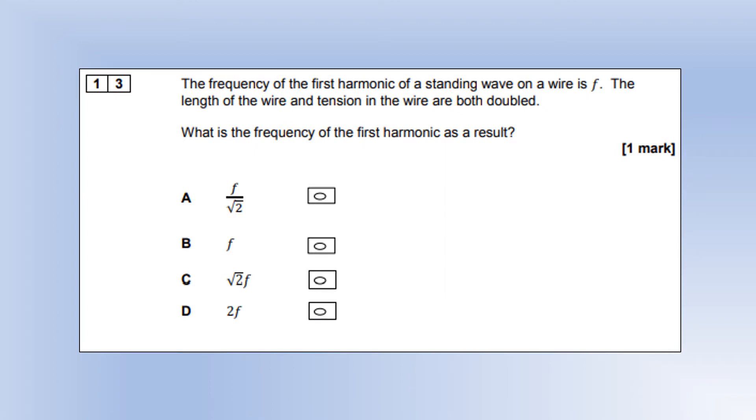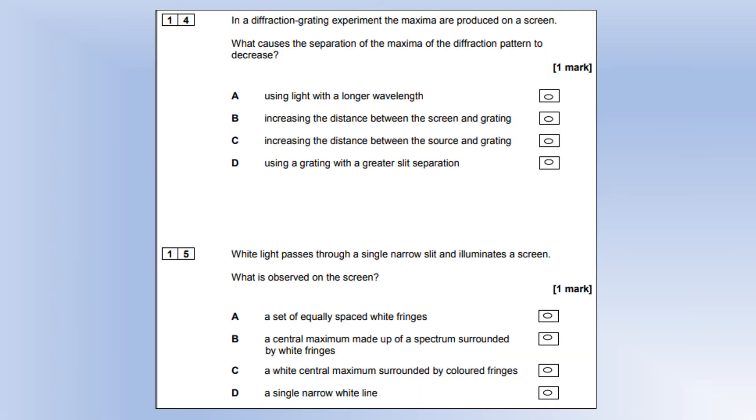The frequency of the first harmonic of a standing wave is F. The length of wire and tension are both doubled. What is the frequency of the first harmonic as a result? I'm going to express the new frequency divided by the old frequency. So we've doubled the length and we've doubled the tension. Lots of this stuff cancels out and you get left with root 2 over 2. So the new frequency is the old frequency divided by root 2, which is option A.